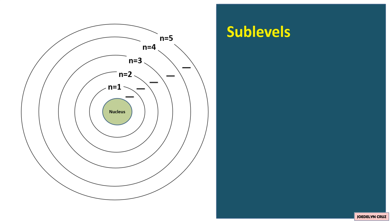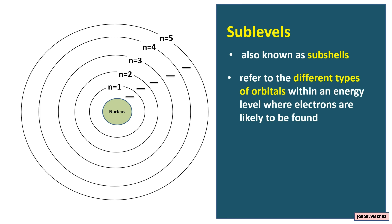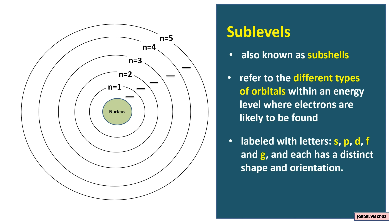The sublevels are also known as subshells. These refer to different types of orbitals within an energy level where electrons are likely to be found. The sublevels or subshells are labeled with letters S, P, D, and F, and each has a distinct shape and orientation.